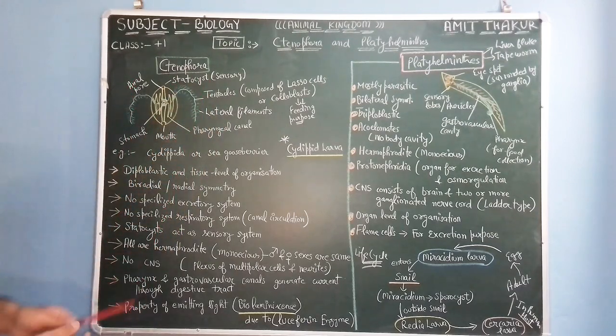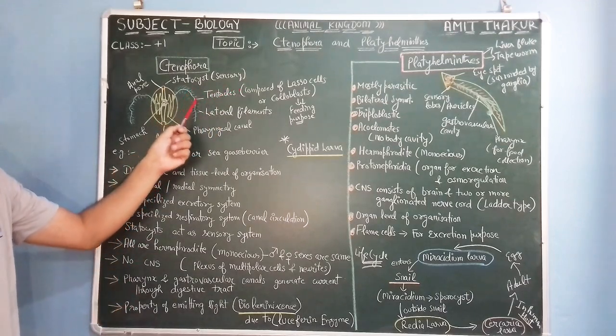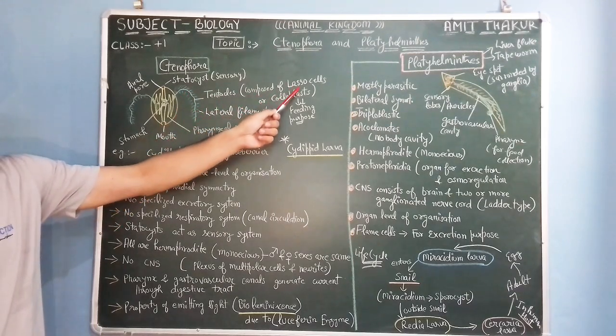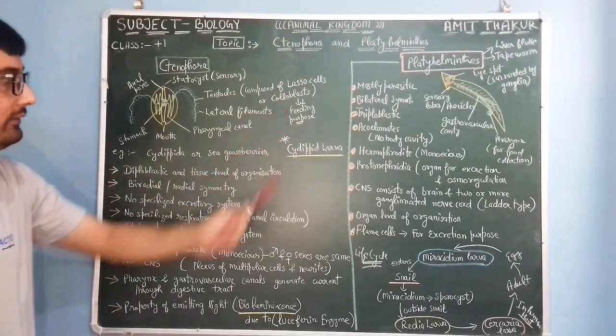They have anal pore, pharyngeal canal. These tentacles are actually composed of, it is very important, these tentacles are composed of lasso cells, L-A-S-S-O.